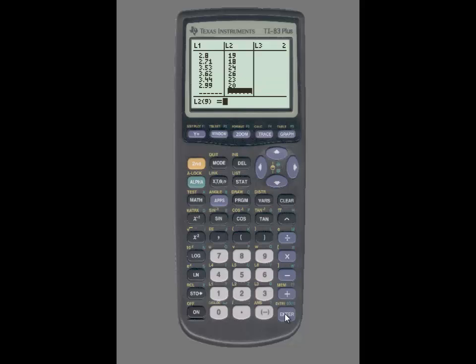Now that the data is entered, we can create a scatterplot. To do so, you'll press the second key and then press the Y equals button to access stats plot. You'll then press number 1, and on this screen we'll need to turn the plot on. Simply press enter so that 'on' is highlighted. Next, go down to type and ensure that the first graph is highlighted.